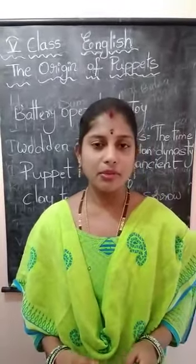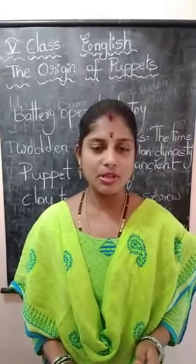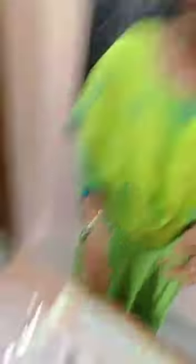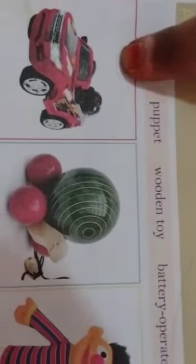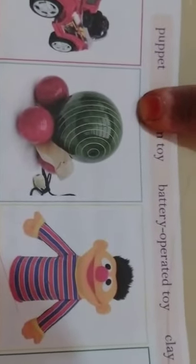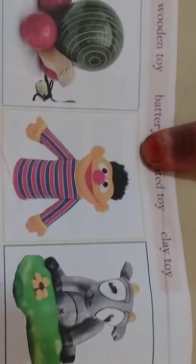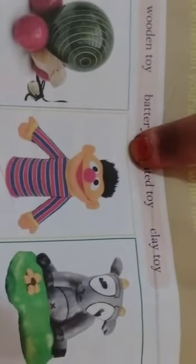Before the class I will show you some pictures. See here children — what is the first picture here? It is a battery operated toy. What is the second picture? It is a wooden toy. What is the third picture? It is a puppet. What is the fourth picture? It is a clay toy.